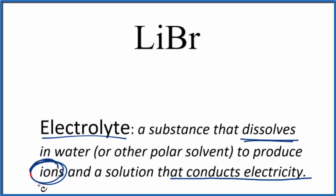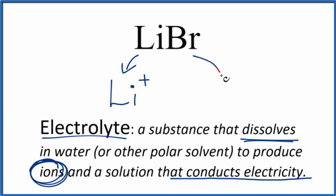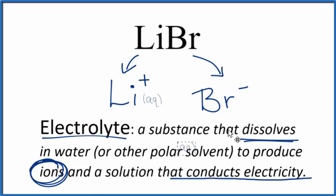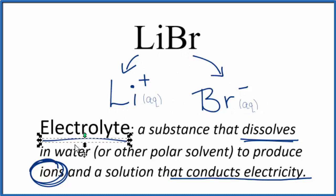It'll dissolve and produce ions — it dissociates into the lithium ion, Li+. Lithium is in group one on the periodic table, so it has a one-plus ionic charge. And then the bromide ion, that's Br-. We put AQ after these since they will be dissolved in water. So since lithium bromide dissociates into ions completely in water, it's an electrolyte — we have ions, it conducts electricity.